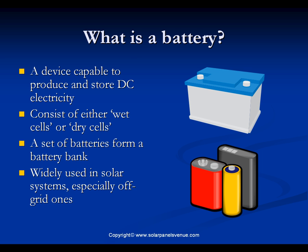Batteries are devices capable of producing and storing DC electricity. A battery cell is a container, usually filled with diluted acid used as electrolyte, with two plates of positive and negative polarity immersed into the electrolyte. Such a battery cell is called a wet cell. There are also dry cells, which do not contain liquid electrolyte. Battery cells connected together form a battery.